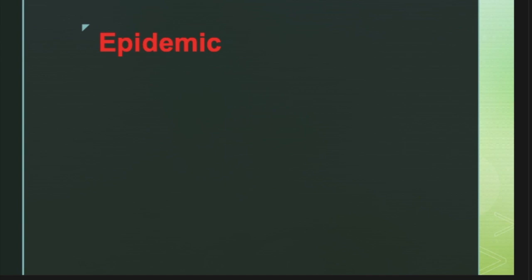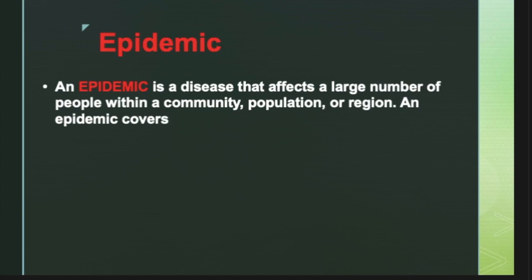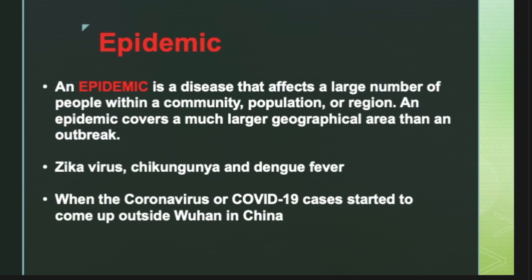Let us look at what's an epidemic. An epidemic is a disease that affects a large number of people within a community, a population or a region. An epidemic covers a much larger geographical area than an outbreak. For example, Zika virus, Chikungunya and Dengue fever are some of the examples of epidemics in India in the past. Also, when coronavirus or COVID-19 cases started to come up outside Wuhan in China, it was noted that the coronavirus outbreak was turning into a coronavirus epidemic.